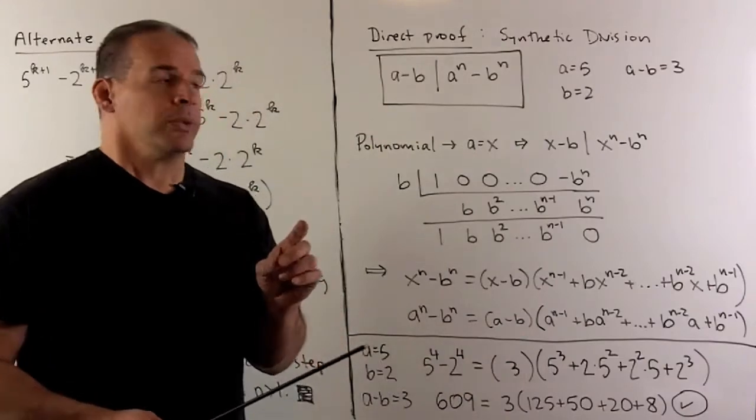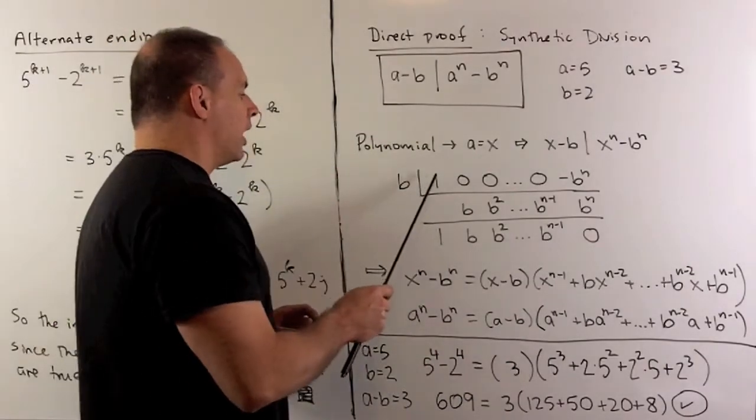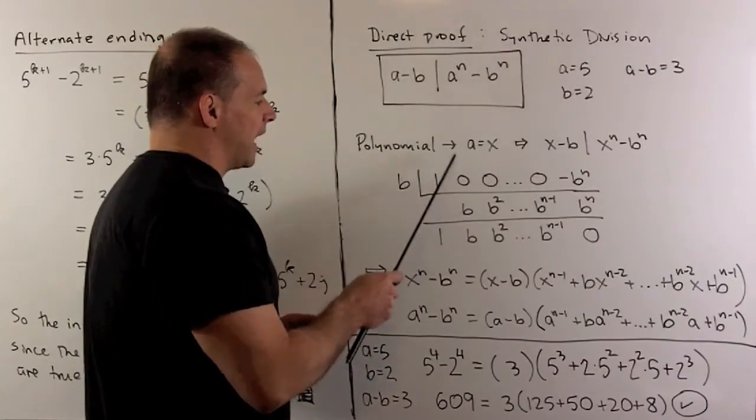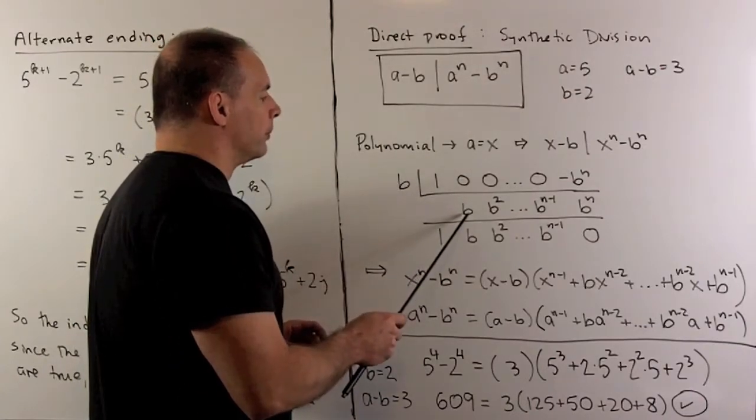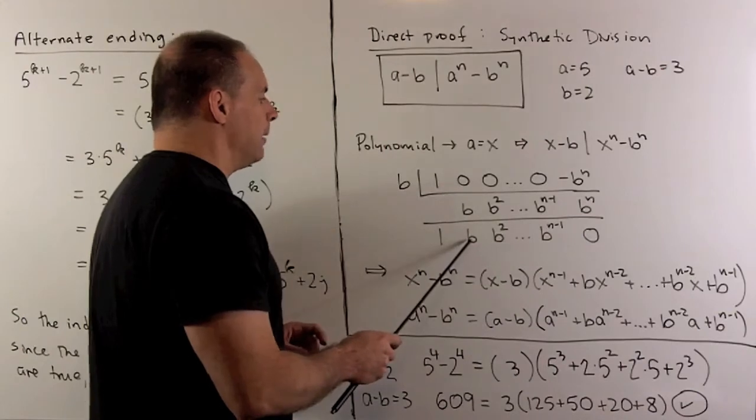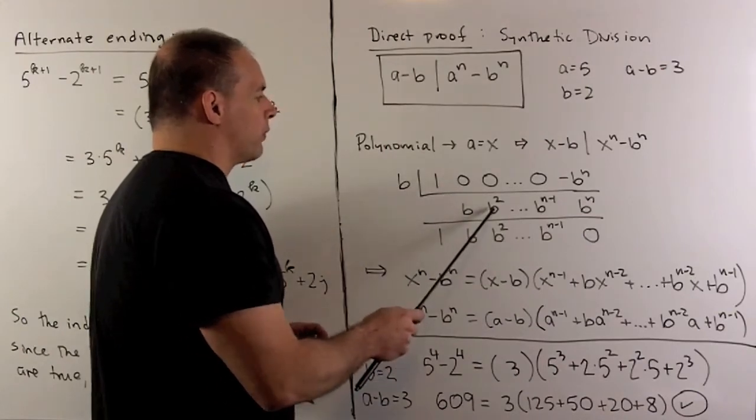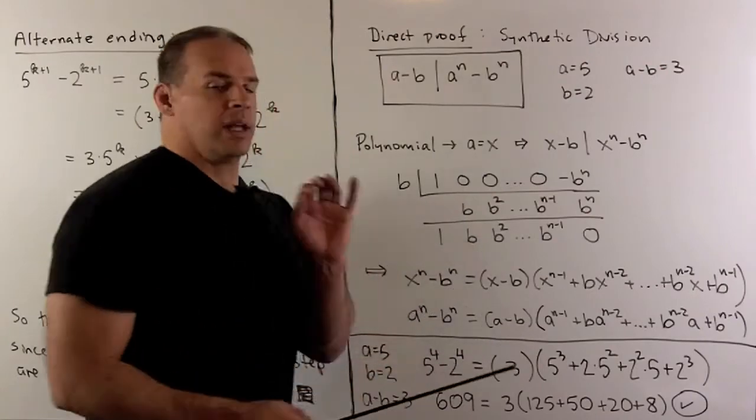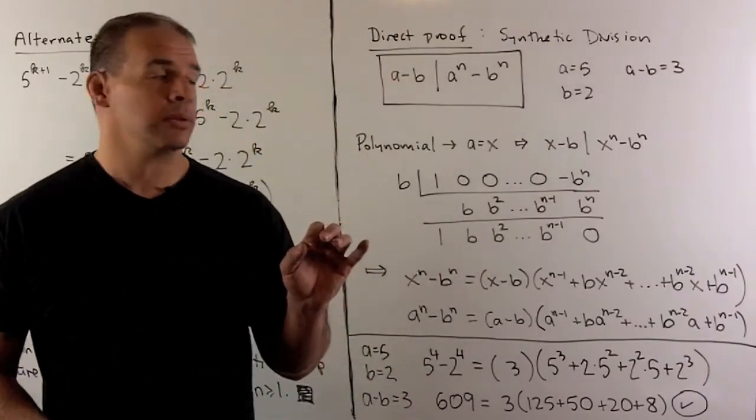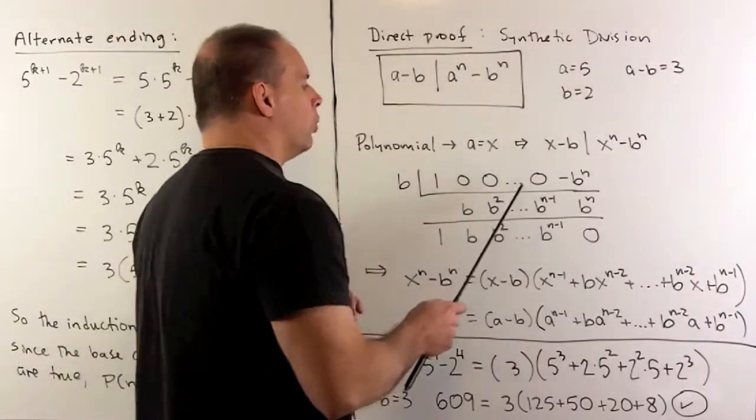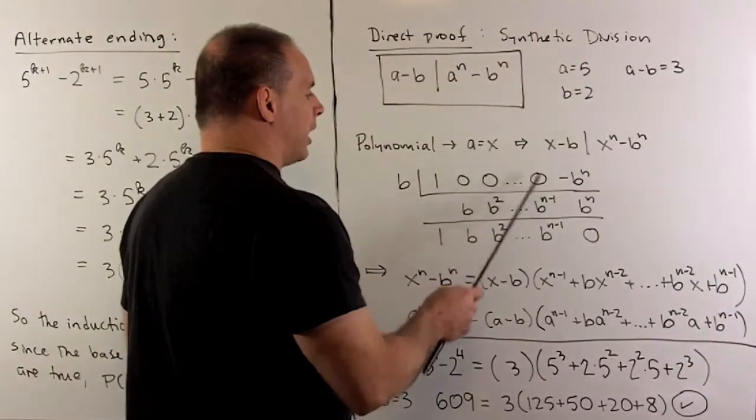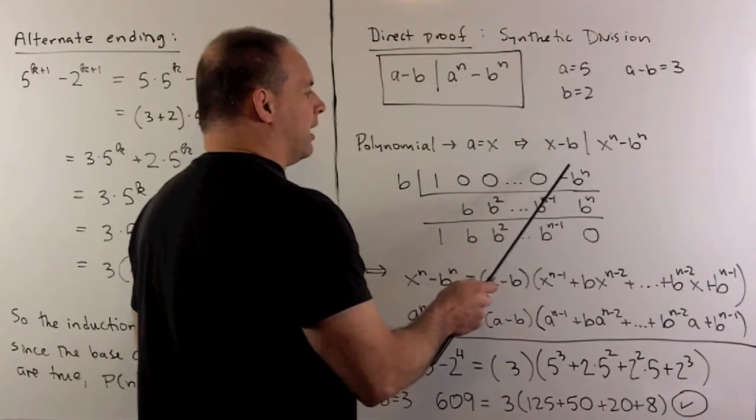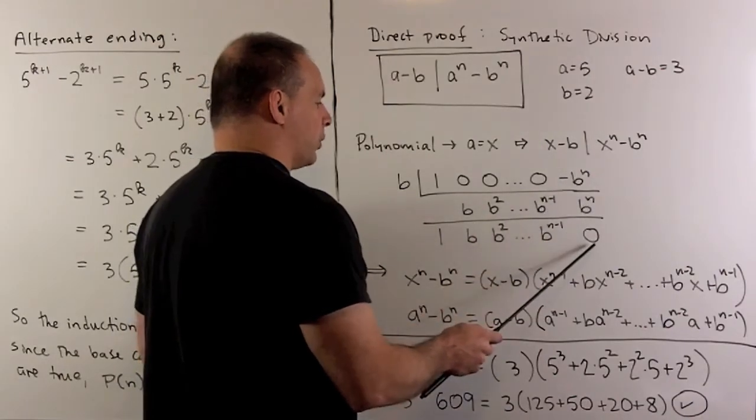For synthetic division, we proceed. I take my 1, I drop it, we multiply by the b, we move it to the next column, middle row. We add, I get a b, multiply, move it over, we get a b squared, add, we get a b squared, and so on. Now, when we get to the next to the last row, I'll have a b to the n minus 1. We multiply, I get a b to the n. The b to the n and the minus b to the n combine to give me a 0.